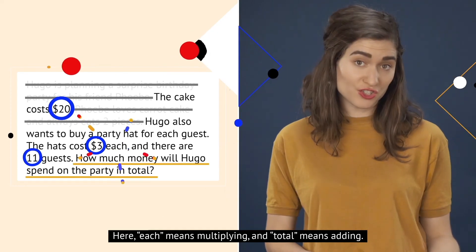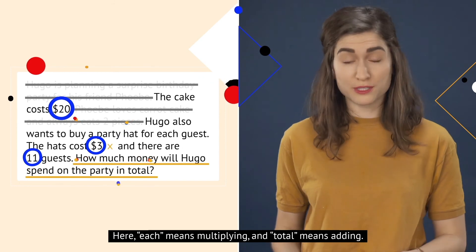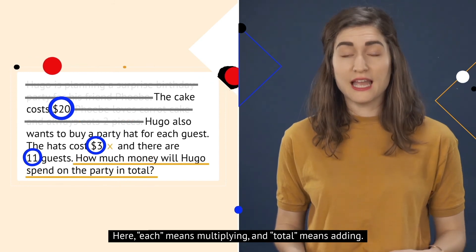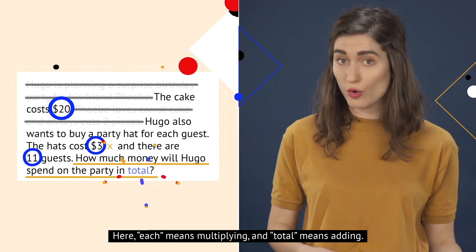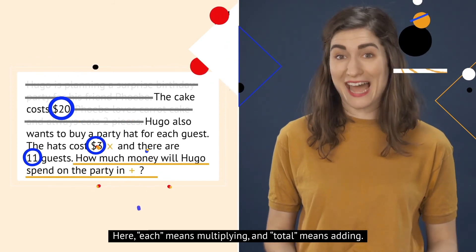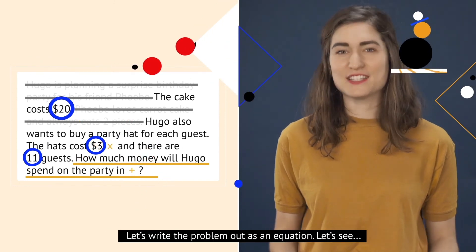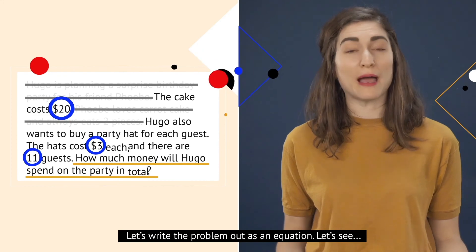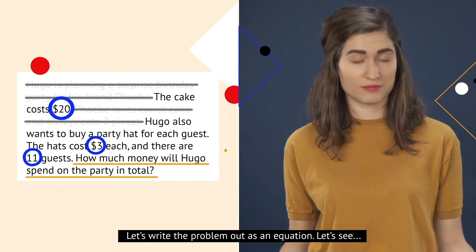Here, 'each' means multiplying and 'total' means adding. Let's write the problem out as an equation.